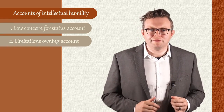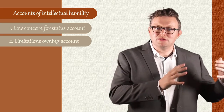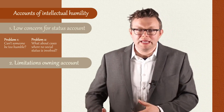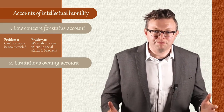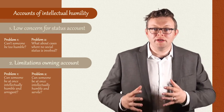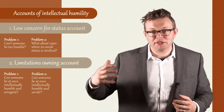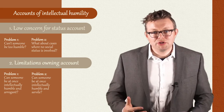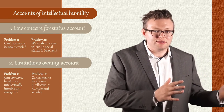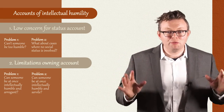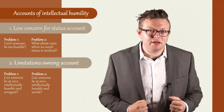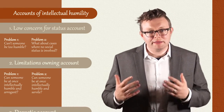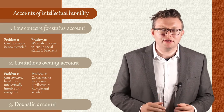So we've seen how the two leading theories of intellectual humility in the philosophical literature each face two worries. The low concern for status view faces: one, worries about the possibility of someone being too humble, and two, worries about scenarios devoid of social status. The limitations-owning view faces worries about: one, allowing for cases where someone can be at once intellectually humble and intellectually arrogant, and two, allowing for cases where someone can be at once intellectually humble and intellectually servile. To be sure, I don't intend for these to be knock-down arguments against these views — there might very well be viable ways to disarm these worries. However, I raise these worries to help motivate us to search for other alternative accounts of intellectual humility. In the next video, I'm going to explore one such alternative: the doxastic account of intellectual humility.